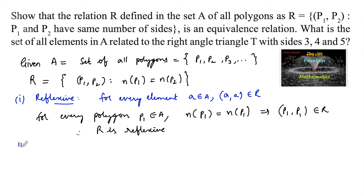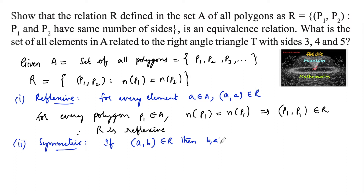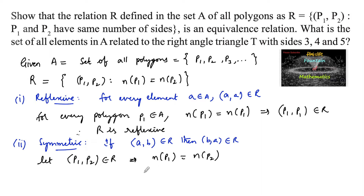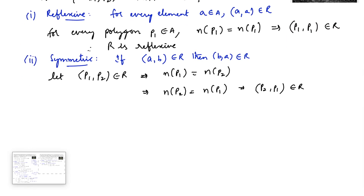Second, symmetric. The condition for symmetric is: if (a, b) belongs to R, then (b, a) belongs to R. Let (p1, p2) belong to relation R, so the number of sides in polygon p1 is the same as the number of sides in polygon p2. This can also be written as the number of sides in polygon p2 is the same as the number of sides in polygon p1, meaning (p2, p1) belongs to relation R. Therefore R is symmetric.